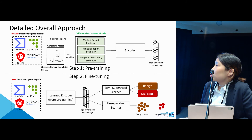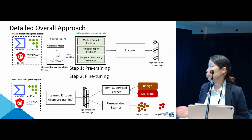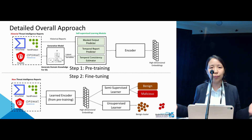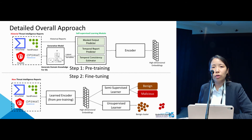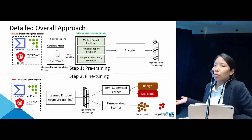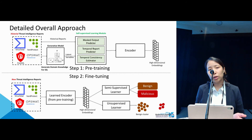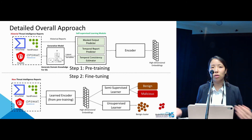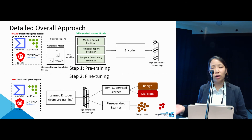This figure shows our overall approach in detail. We first use a GEM model before self-supervised learning, which provides dependency analysis at the corpus level. Then using the self-supervised learning module, we pre-train the encoder. Using that pre-trained encoder, the new threat report is passed through and we perform two downstream tasks: semi-supervised learning, which takes just a small set of labels such as 100, and unsupervised learning, where we cluster the embeddings and use the small cluster as malicious.